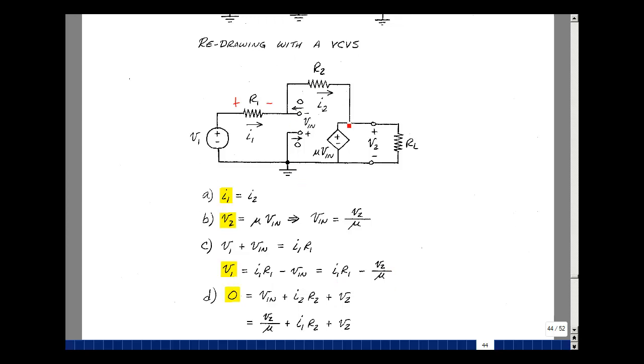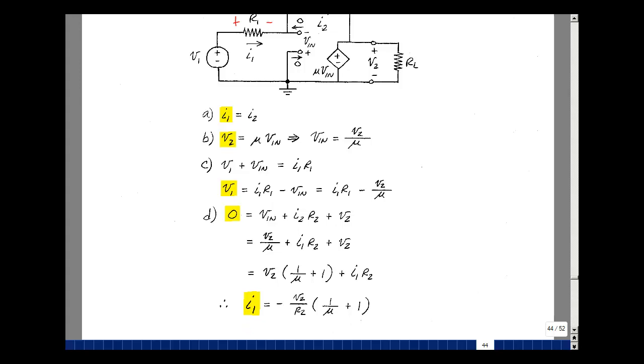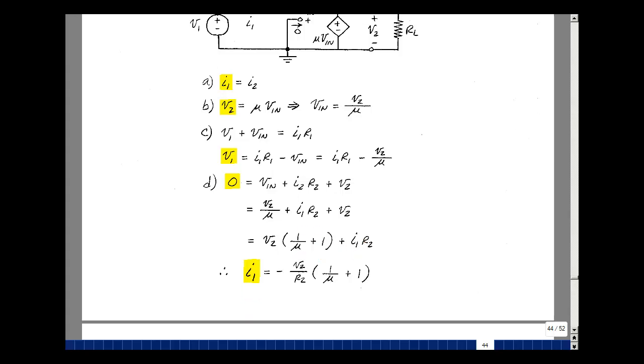Let's go around this loop. So a drop in voltage of Vn, a drop in voltage of I2 times R2, and a drop in voltage of V2. But there's no rise in voltage, so I'll set that equal to zero. Vn is equal to V2 over mu. I1 is equal to I2. And get this equation in terms of two unknowns, V2 and I1. Let's group the things that multiply V2. So 1 over mu plus 1, and then I1 R2. So let's solve for I1.